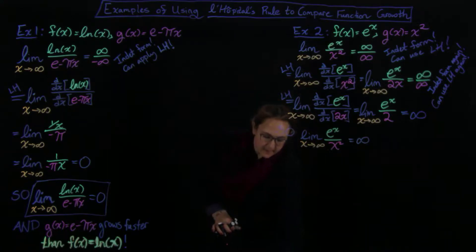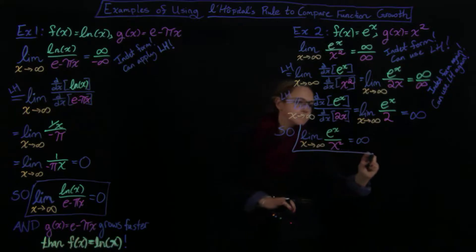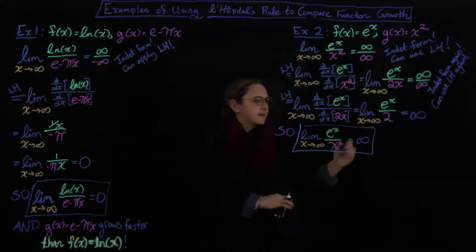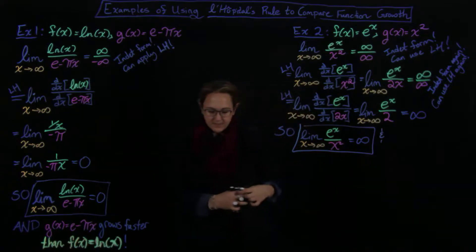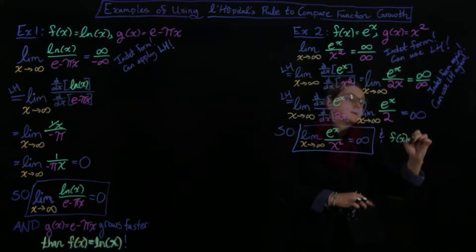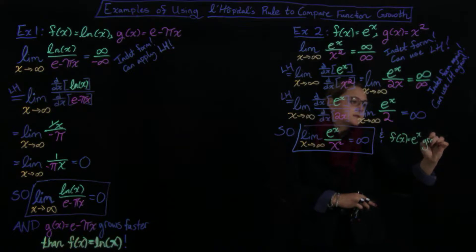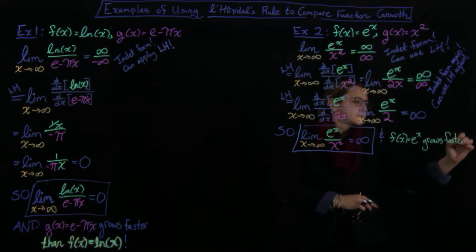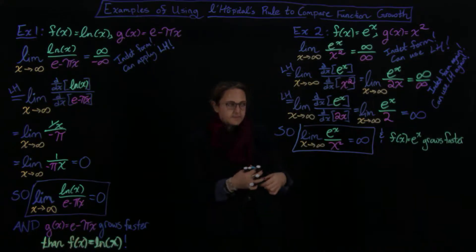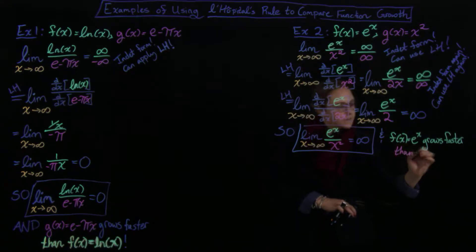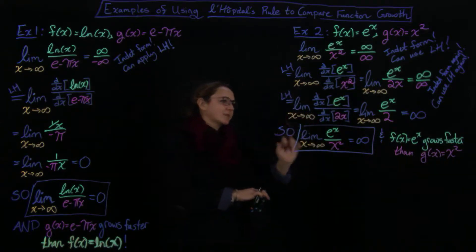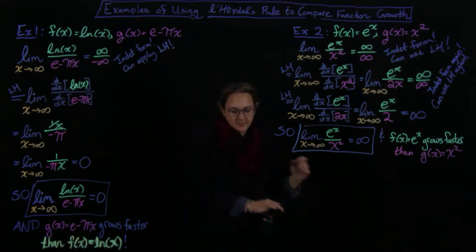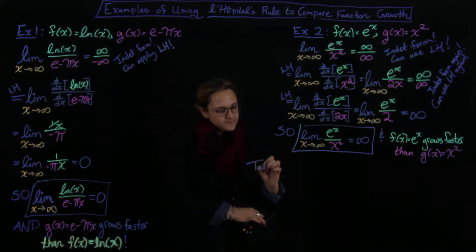The limit equals infinity, which tells us that f of x equals e to the x grows faster than g of x equals x squared. The limit of the ratio is infinite, so the top grows faster than the bottom. The takeaway from this particular example is important.